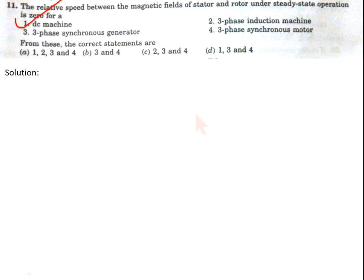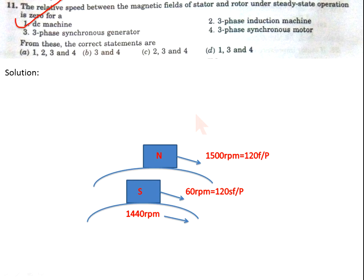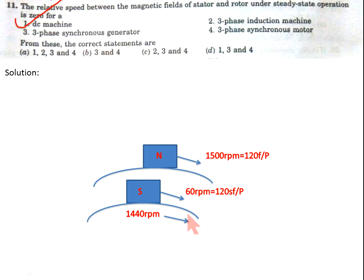Now, come to the induction machine. The stator magnetic field rotates at 1500 RPM for a 4-pole, 3-phase, 50 Hz machine. Due to the slip, the rotor magnetic field rotates at 60 RPM with respect to the rotor structure, and the rotor itself rotates at 1440 RPM. The rotor magnetic field rotates at 1500 RPM with respect to the stator, but at 0 RPM with respect to the stator magnetic field. So statement two is also correct.